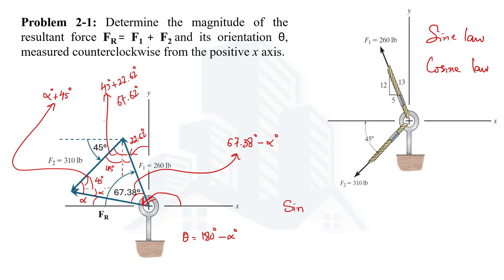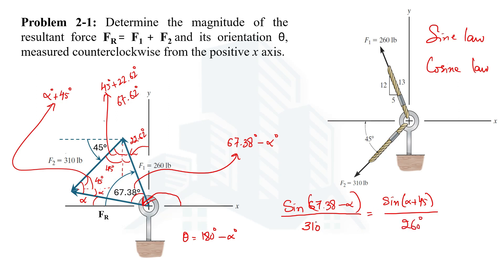According to the sine law: sin(67.38 − α) / 310 = sin(α + 45) / 260. In this equation, alpha is the only variable. Solving gives alpha equal to 3.728 degrees. Therefore theta equals 180 minus 3.728, which gives 176.272 degrees as the orientation of the resultant force.